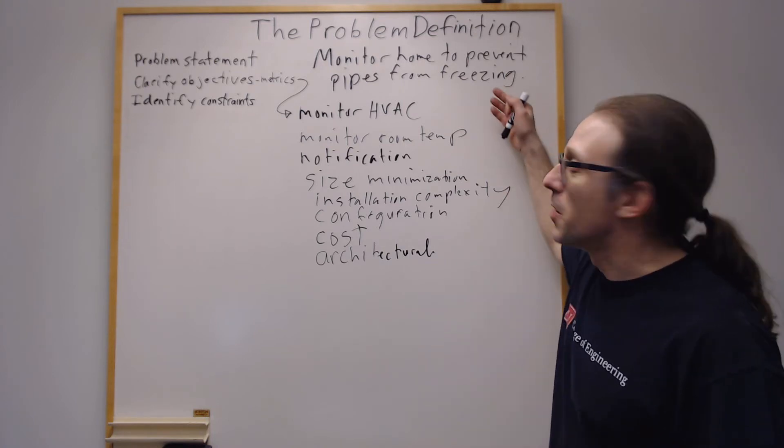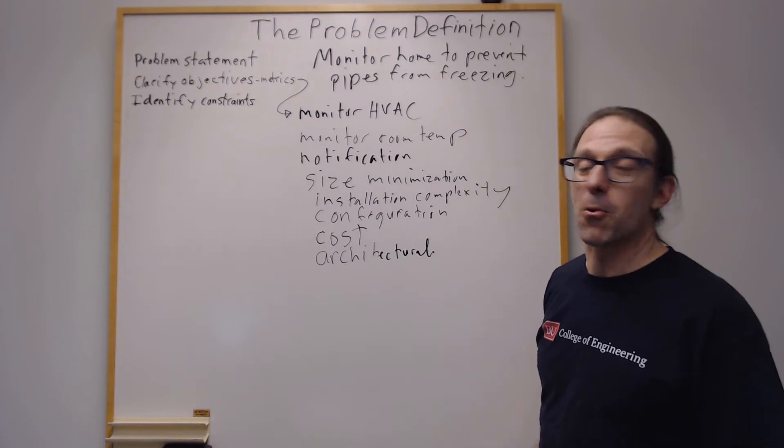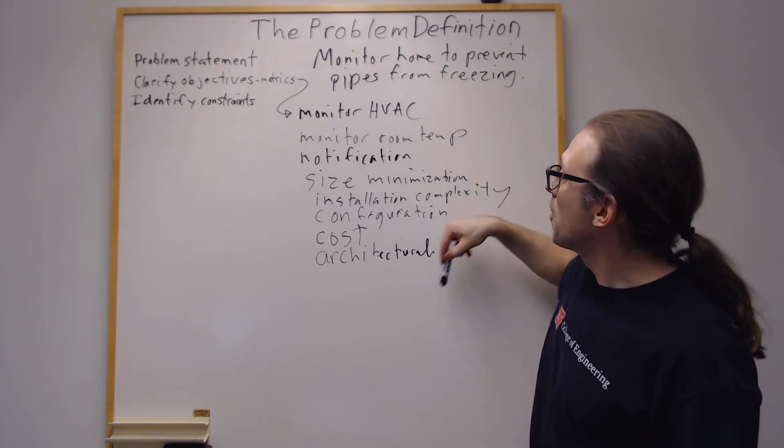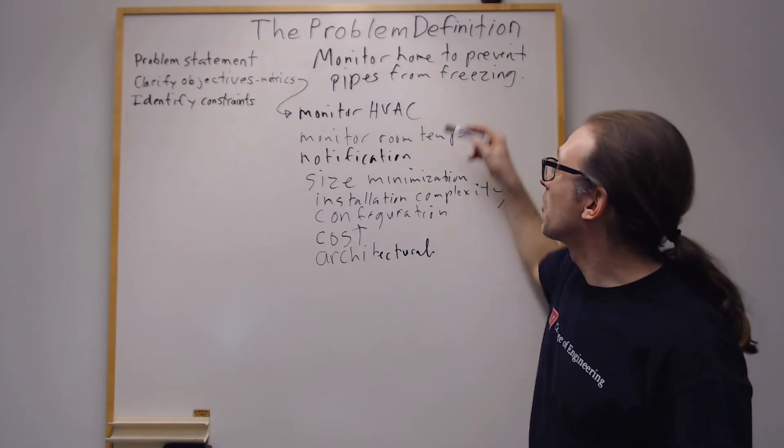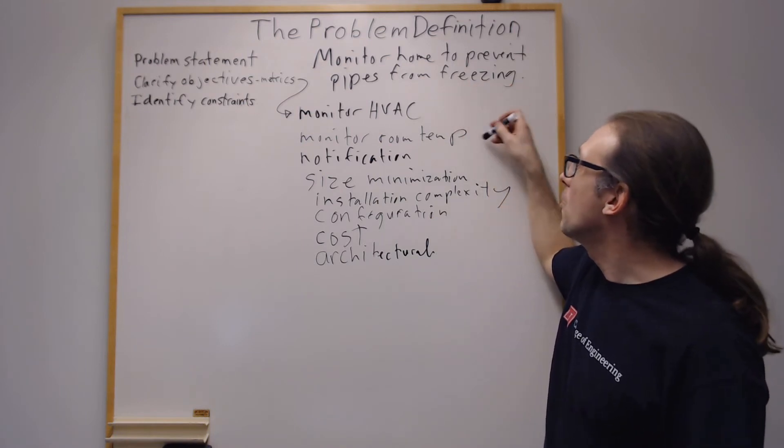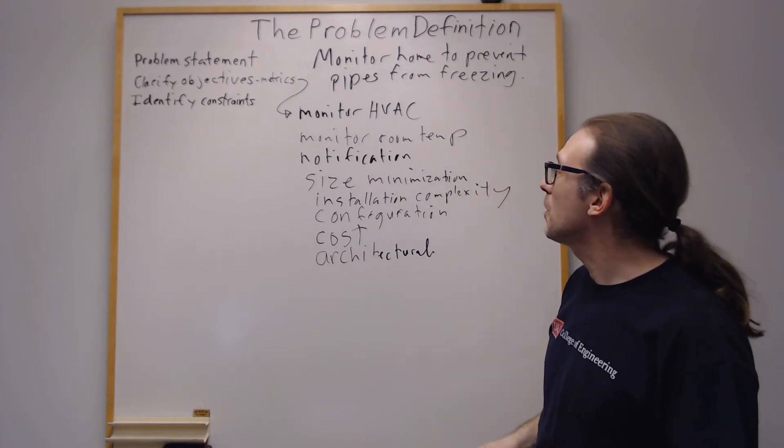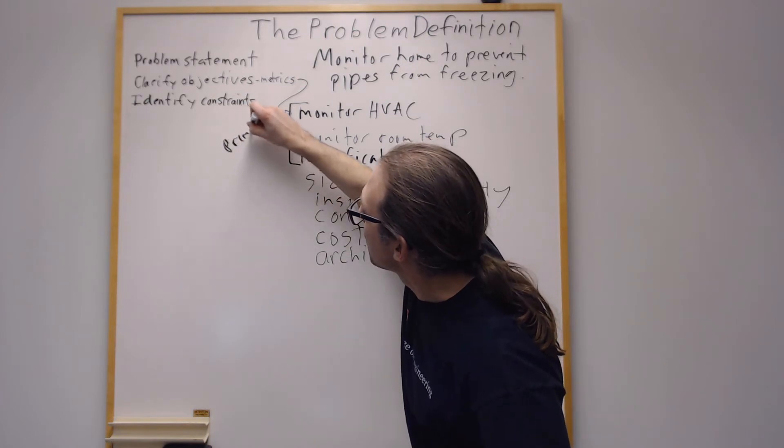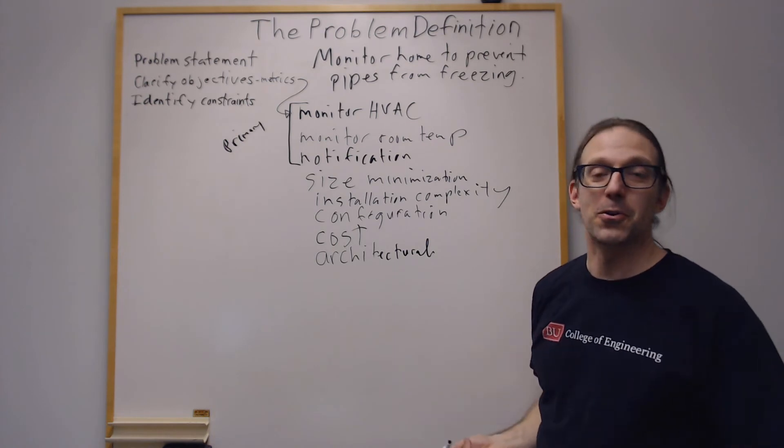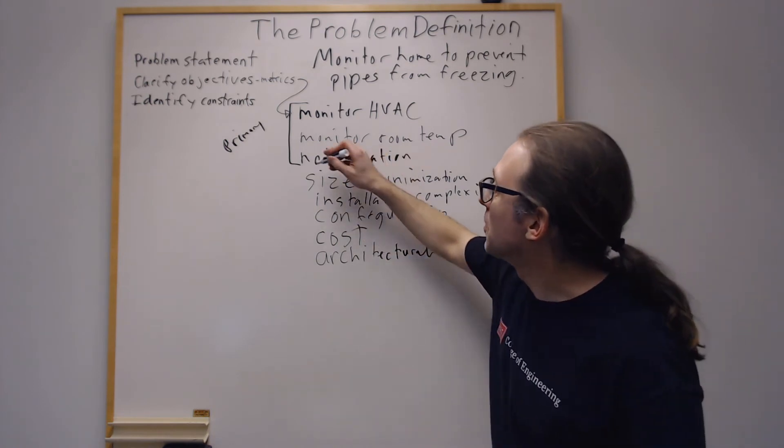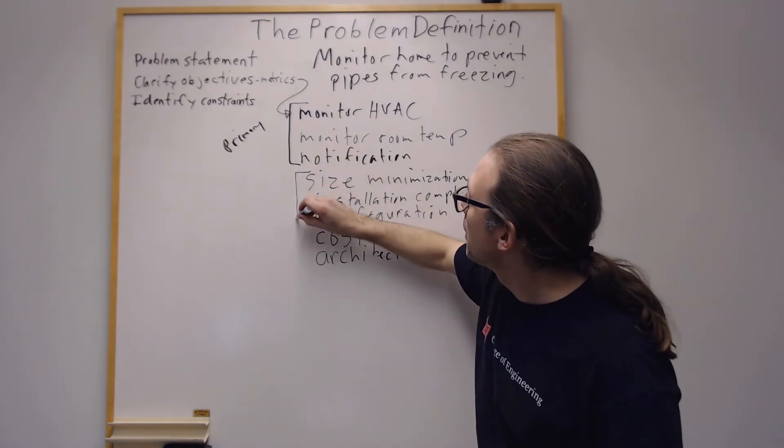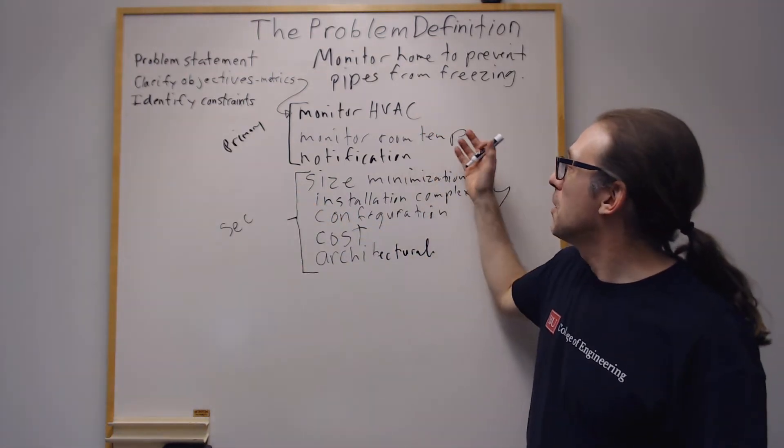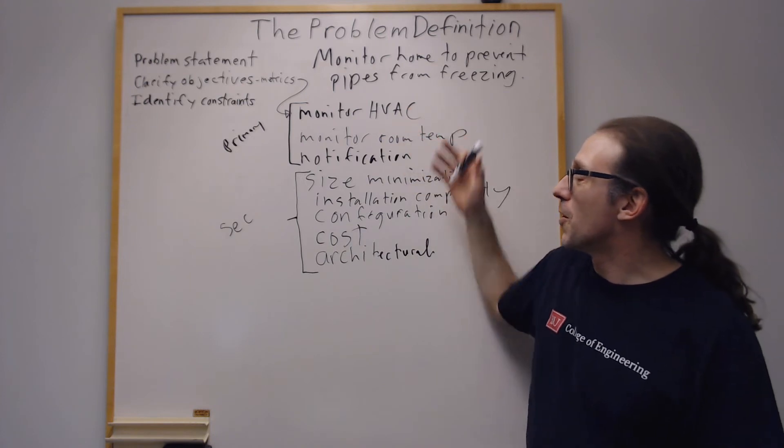So these are some of our objectives right here. And we have to look at these objectives and try to rank them in order. Like which ones are the most important for our device in order to solve its problem. It ended up that these are in sort of a priority order right here. Like it clearly has to be able to monitor whether the HVAC system is running. We want it to monitor the room temperature and notify. So these are really the primary objectives right here. If it doesn't do these, then it's not going to be able to answer the problem statement and no one's going to really want it. So things like this are wants. These are a little bit more like secondary.